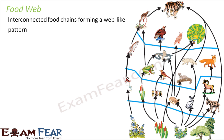Why do food webs exist? They exist because one particular organism can have a variety of feeding habits. One organism can eat insects, it can also eat plants, and it can also eat bigger animals. There are a variety of living organisms which that particular organism can eat, and this gives rise to the concept of food web.